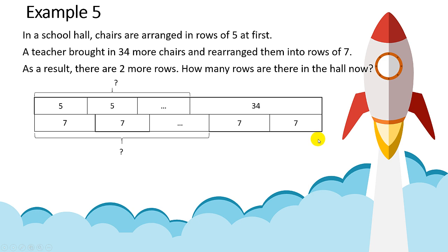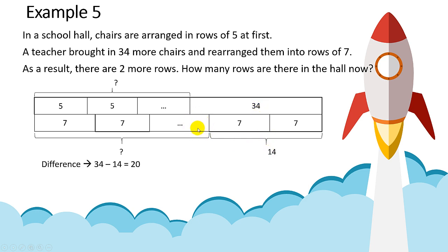Now, you have to find the difference over here. To find the difference, take 7 times 2 to get 14. Then take 34 minus 14 to find the difference. So 34 minus 14 gives you 20.